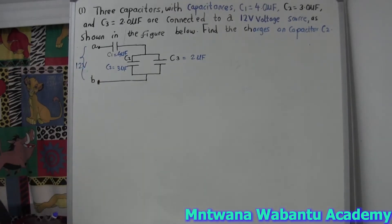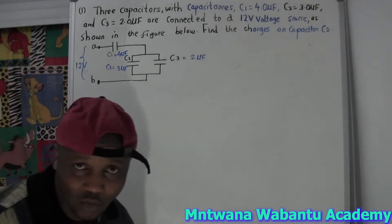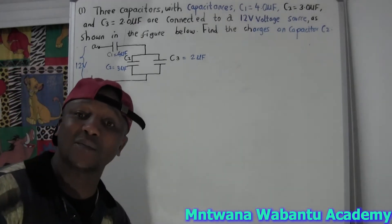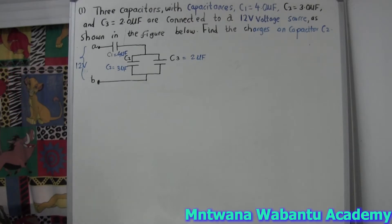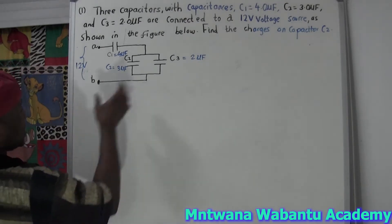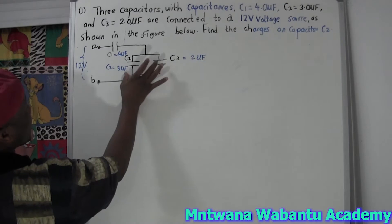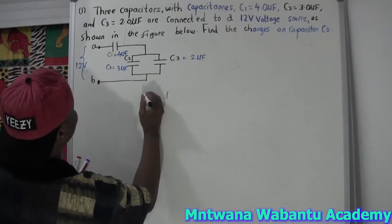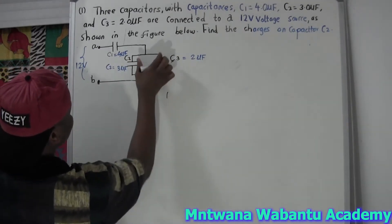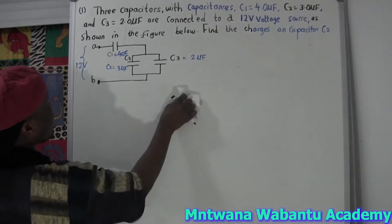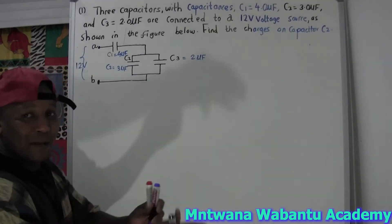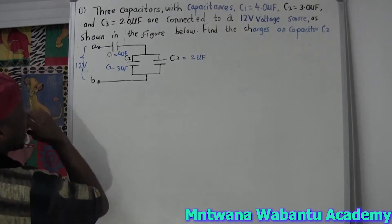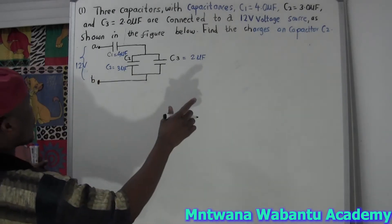We want to find the charge on capacitor C2. Let me break this down. First, I can see that two of these capacitors are parallel to each other. Whenever capacitors are parallel, you add them together.